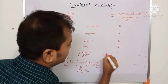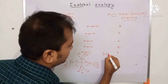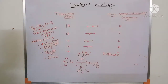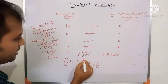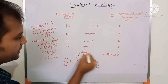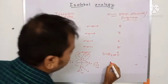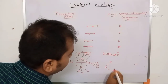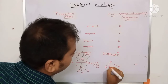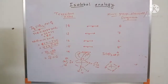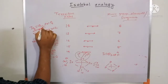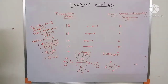Since the Ir(CO)₃ fragment is isolobal with phosphorus, we can replace each Ir(CO)₃ fragment with P, giving P₄. Therefore, Ir₄(CO)₁₂ is isolobal with P₄.